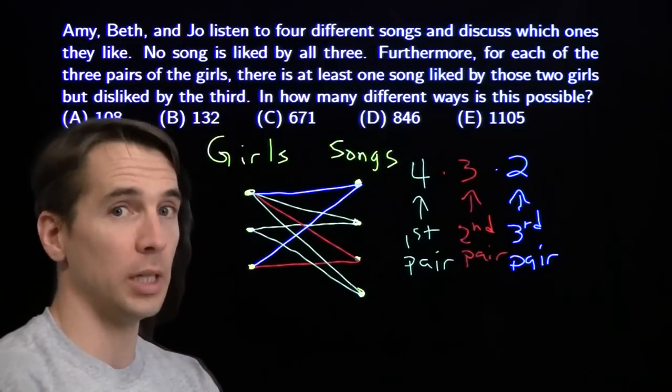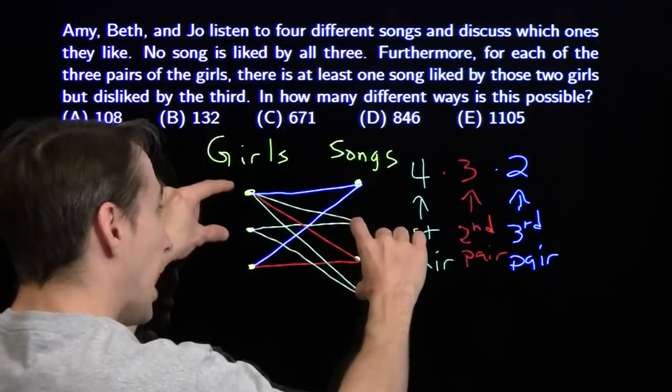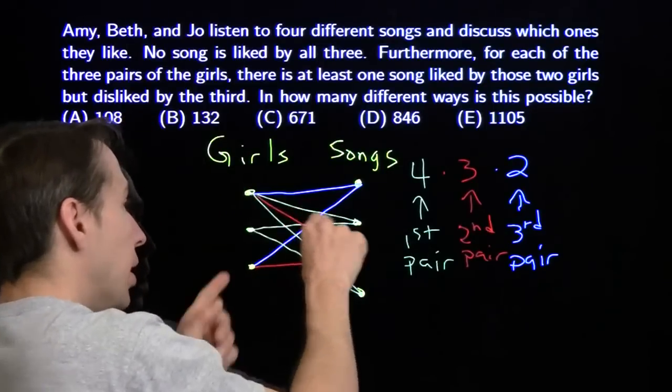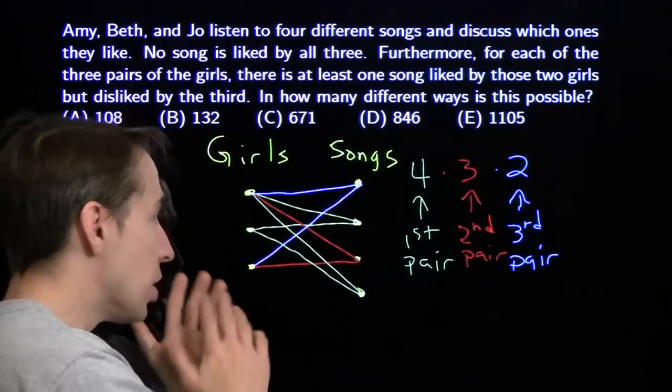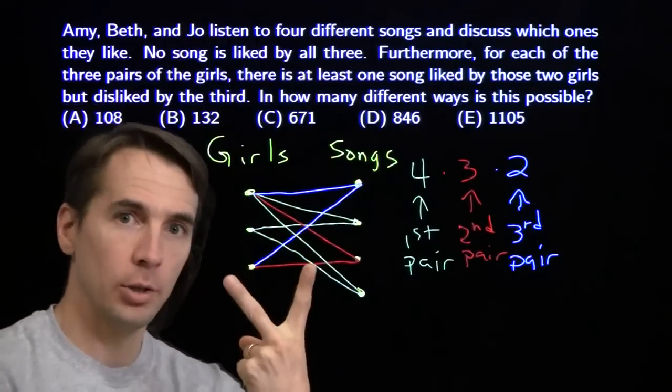So what I'm going to do here is I'm going to split into cases. I'm going to look at one case where we have a setup like this. We have one pair of girls that likes two songs. And then we're going to look separately at what happens if there's no pair of girls that likes two songs.